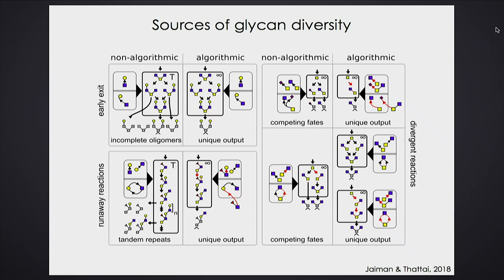In my figures, dark boxes represent one Golgi cisterna — the reaction compartment. In the little lozenges I graphically describe which enzymes are in that compartment. For example, an enzyme that adds a yellow circle to a blue square. What happens if I feed in a tree that has two blue squares? Since the enzyme doesn't care about the rest of the tree, it cannot distinguish left from right, and stochastically — depending on which part it bumps into first — it will extend either one with some probability per unit time.